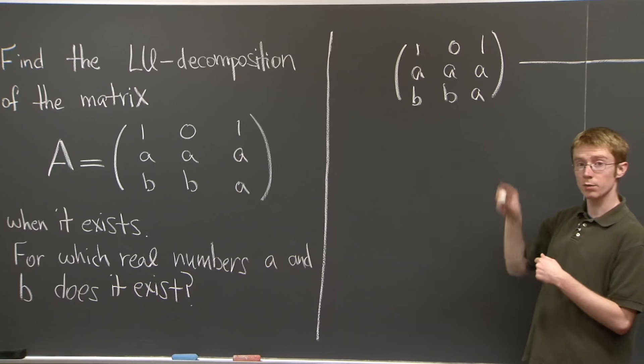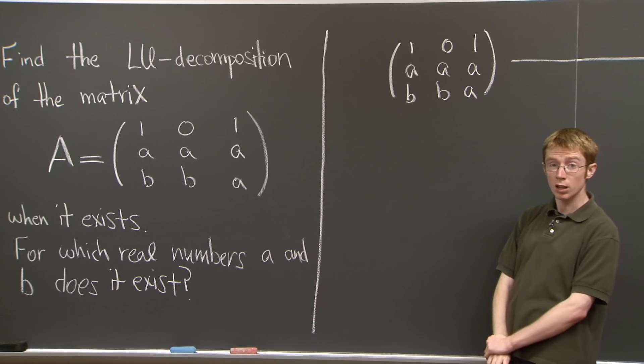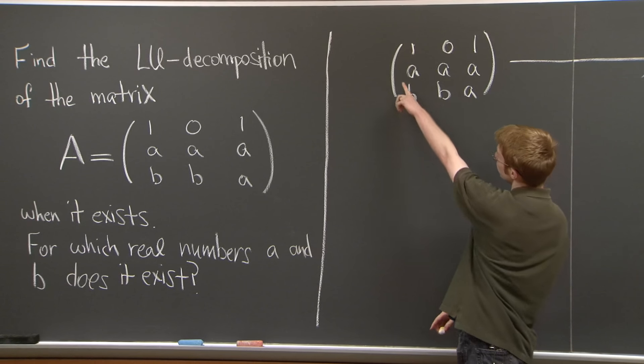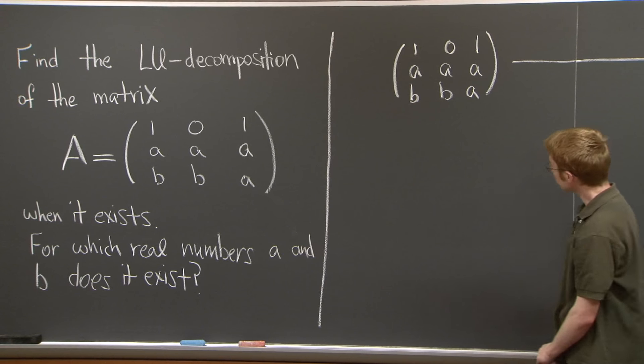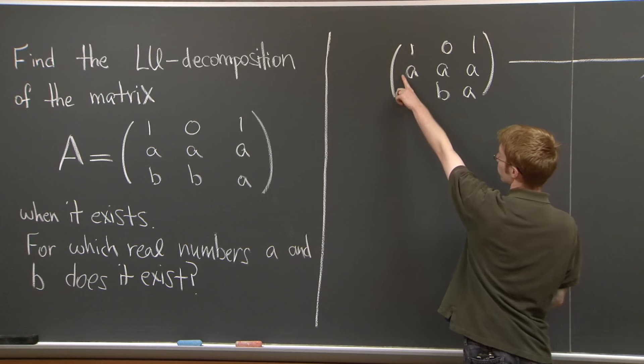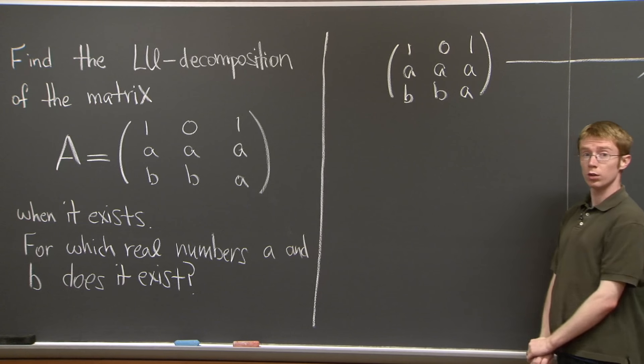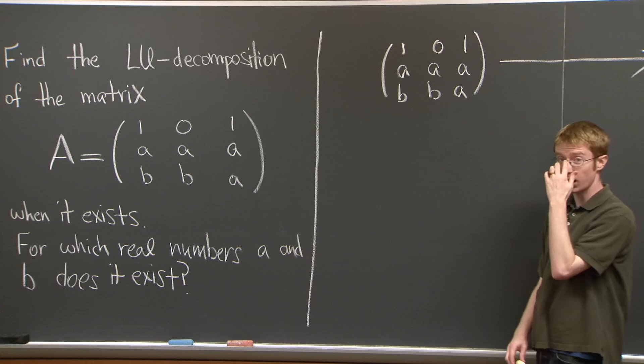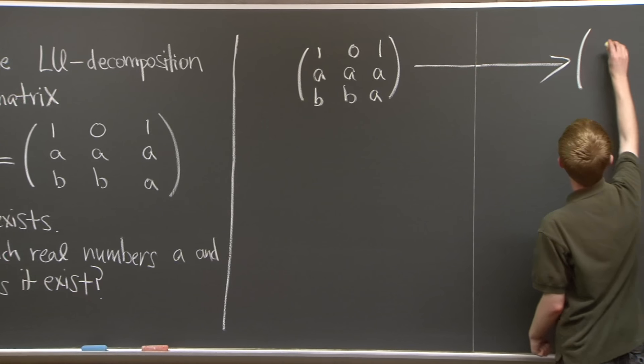And we want to do elimination. So which entry do we eliminate first? That's right. It's this 2-1 entry. So we replace the second row by the second row minus a times the first row. And we get this.